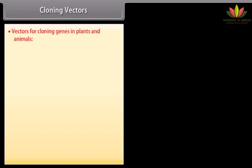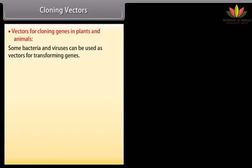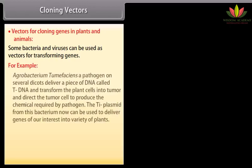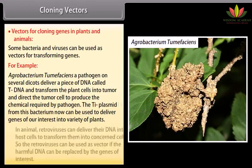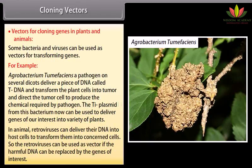Vectors for cloning genes in plants and animals. Some bacteria and viruses can be used as vectors for transforming genes. For example, Agrobacterium tumefaciens, a pathogen on several dicots, delivers a piece of DNA called T-DNA and transforms the plant cells into tumor, directing the tumor cell to produce chemicals required by the pathogen. The Ti plasmid from this bacterium can now be used to deliver genes of our interest into a variety of plants. In animals, retroviruses can deliver their DNA into host cells to transform them. So retroviruses can be used as vectors if the harmful DNA is replaced by the genes of interest.